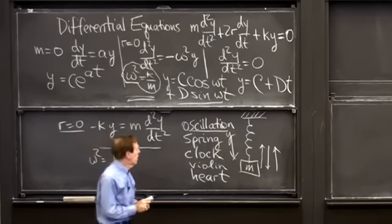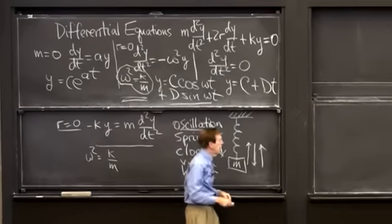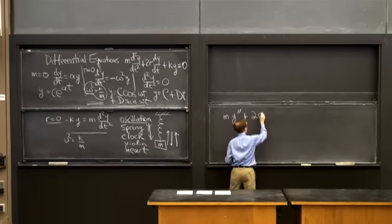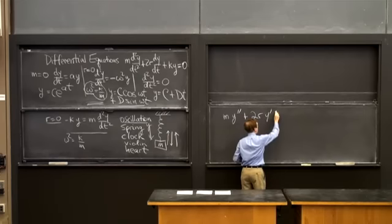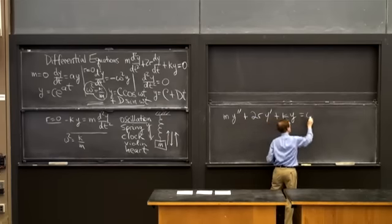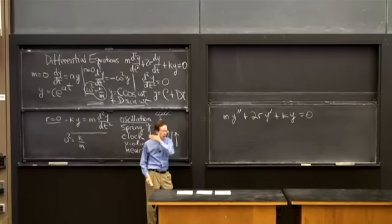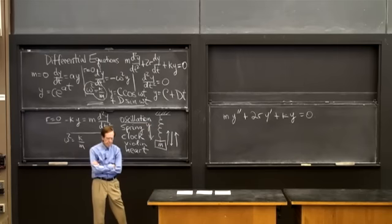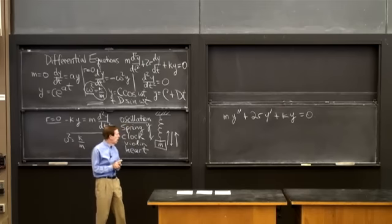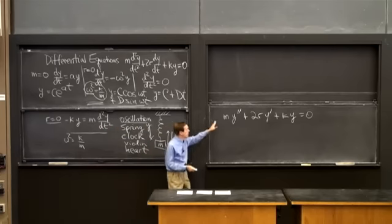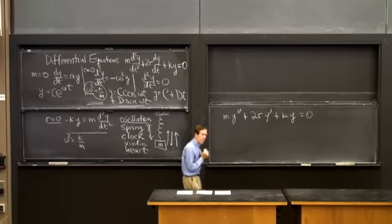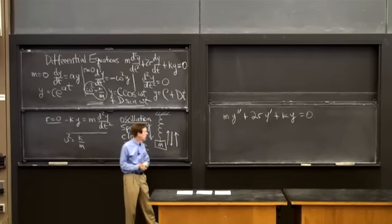Now let's allow some resistance and solve the full equation: m·y'' + 2r·y' + k·y = 0, for any constants m, r, and k. The exponential function takes us right to the answer. This is the most important equation you'd see in a differential equations course. The key idea: try y = e^(λt).